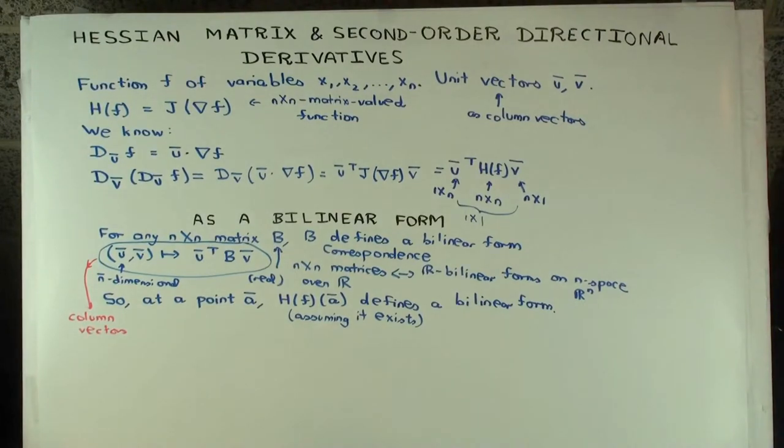So now where does this fit in with the Hessian matrix? Well, the Hessian matrix is actually a matrix-valued function. It's not a matrix of numbers, it's a matrix of functions. But at a point, it's a matrix of numbers, if it exists, if it exists at the point.